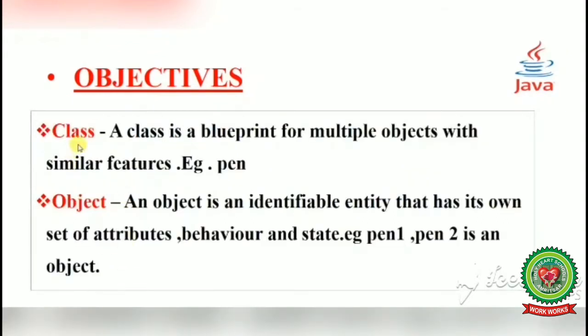What is a class? A class is a blueprint for multiple objects with similar features. Blueprint means we have created a design and after that we will create multiple objects of the same type. Example: pen is a class.